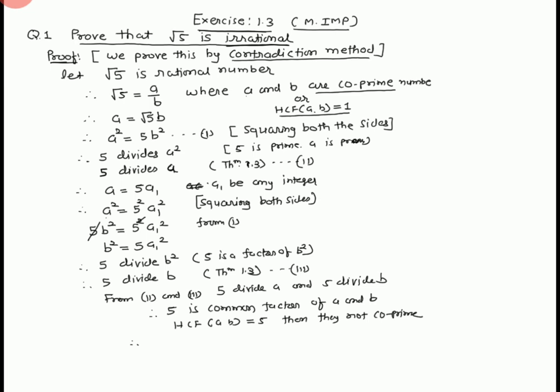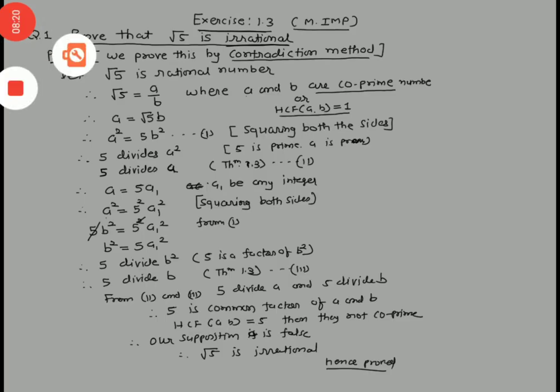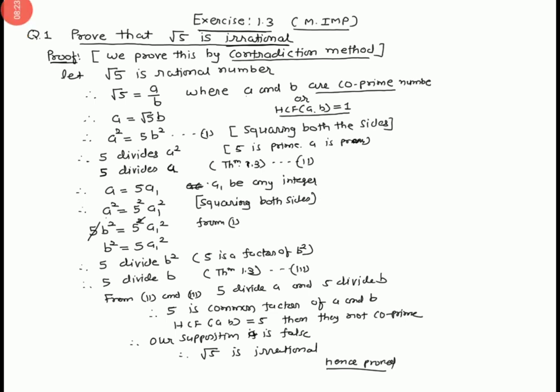Therefore, our supposition is false. Therefore, root 5 is irrational. Hence proved. This we proved by the contradiction method. We supposed root 5 equals a upon b, a rational form, and proved that root 5 is irrational. Thank you.